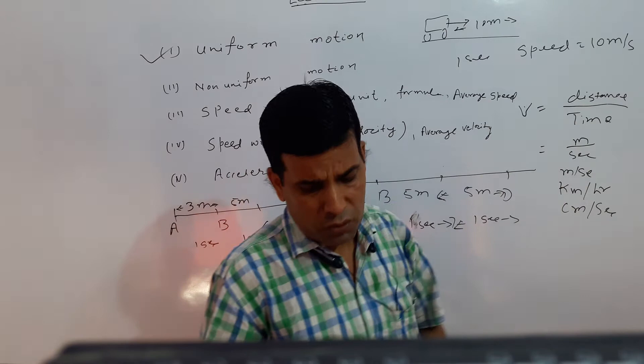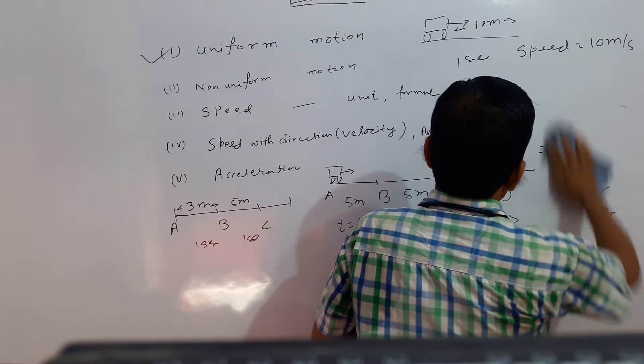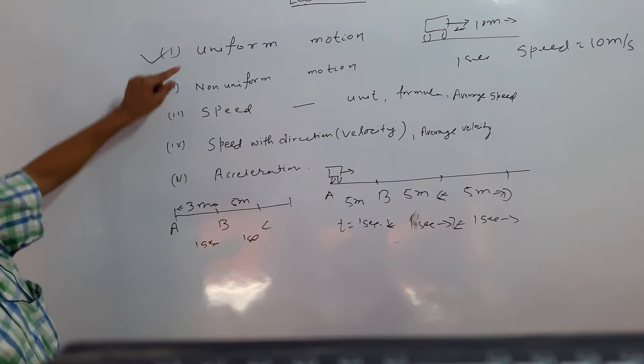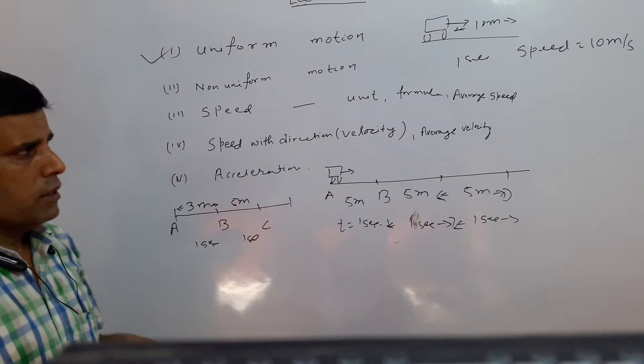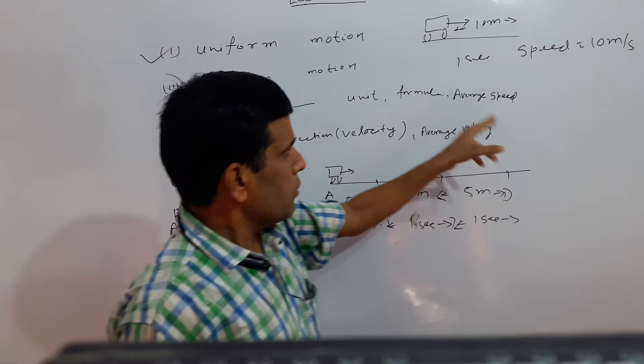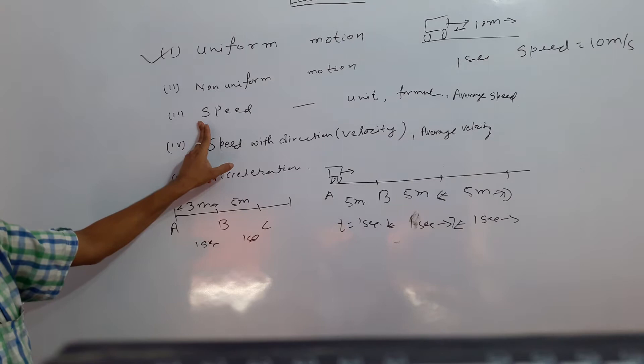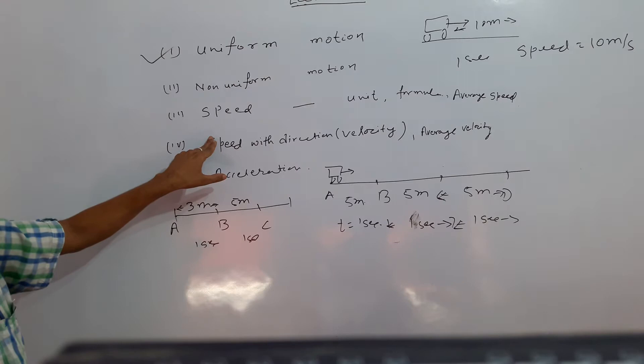Now, a very important concept. We discussed uniform motion and non-uniform motion. Similarly, in the case of speed, we can say uniform speed or non-uniform speed. In uniform speed, if the motion is uniform, the speed remains constant every interval. If the motion is non-uniform, the speed changes — that is non-uniform speed.